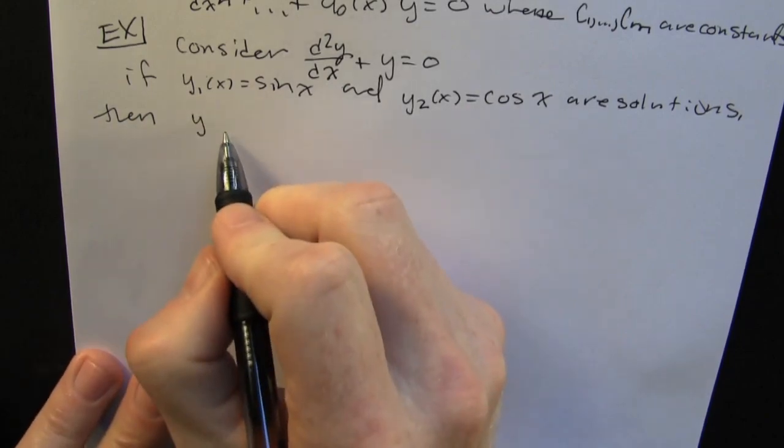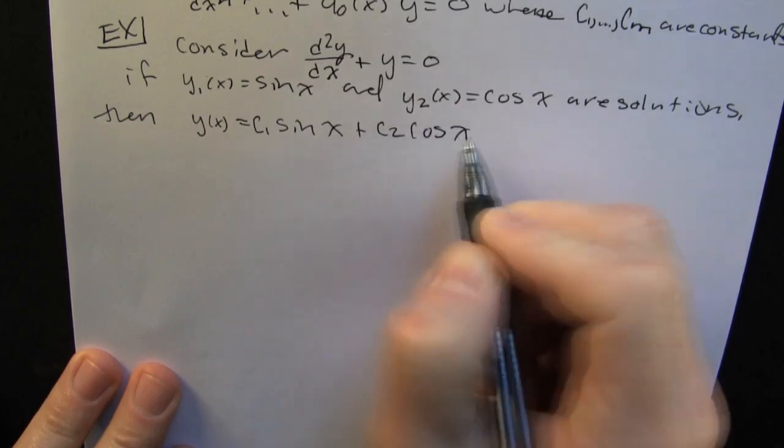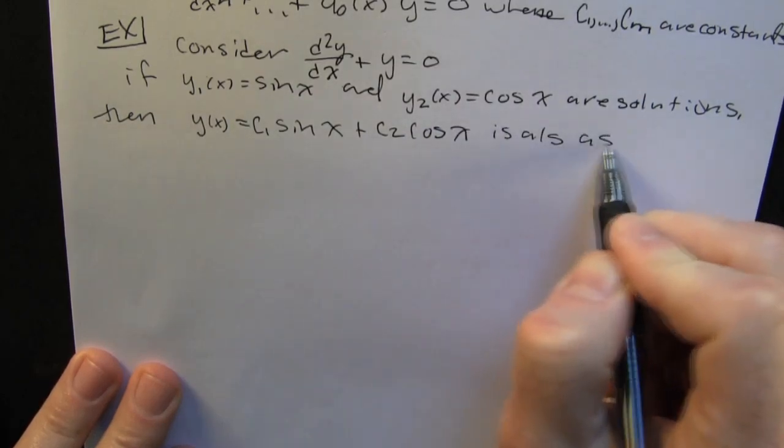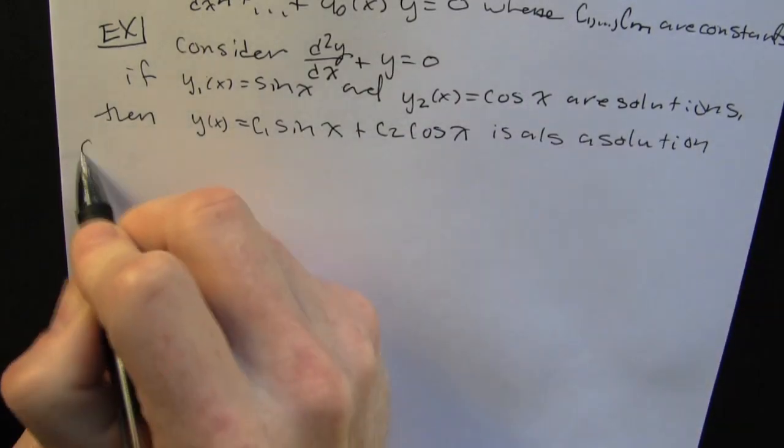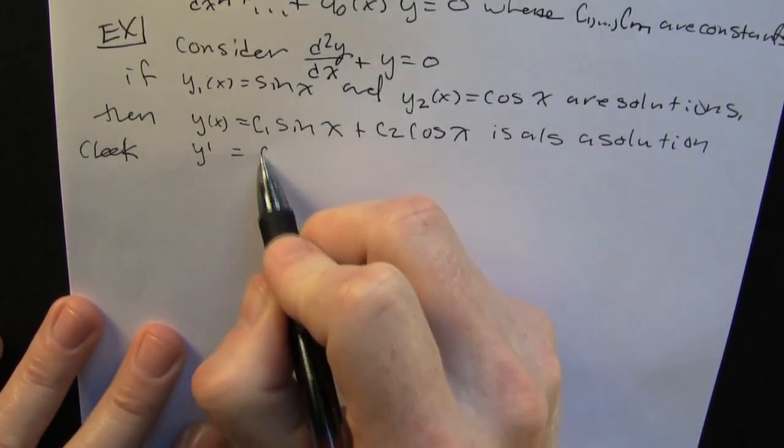So now we're setting up a general solution, which is going to be a linear combination of those two. That means I'm going to have constants in front of each one of those. Let's go ahead and check. Let's take a couple of derivatives and then plug it right on in there. I don't believe them.